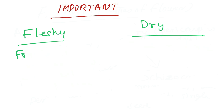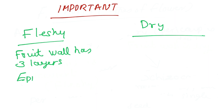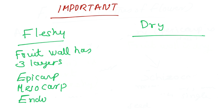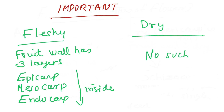Another very important distinction between fleshy and dry fruits is that the fleshy fruit wall has three layers — from outside to inside: epicarp, mesocarp, and endocarp. The innermost layer is the endocarp. These three layers are very important from an examination point of view. For dry fruits, there is no such differentiation of the pericarp into these three parts.